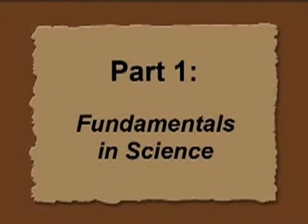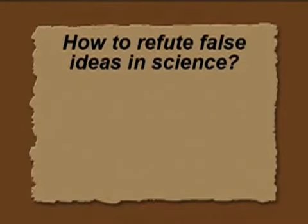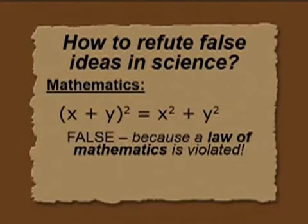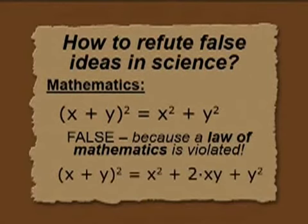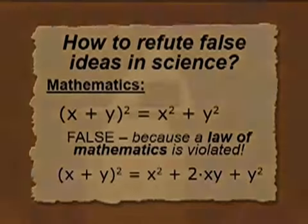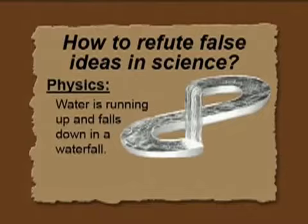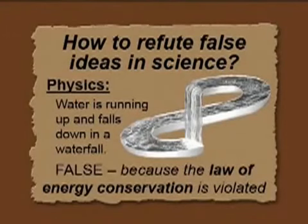Part one: fundamentals in science. How to refute false ideas in science? Let me start with an example in mathematics. You see there is an equation and it is false because a law of mathematics is violated. You see the other equation which is right. That is very important in science — finding what is the wrong situation and what is the right situation. In physics, water running up and falling down in a waterfall: is it possible or not? It is false because the law of conservation of energy is violated, so it is an impossible process.